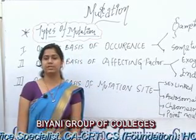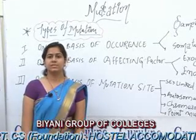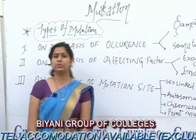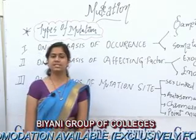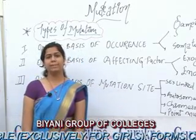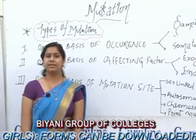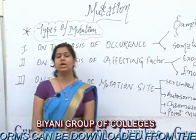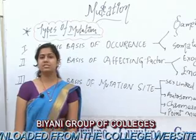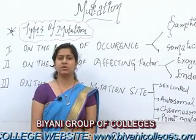Second is base pair substitution, which has different types. First is base pair substitution itself. Second is base analog. Third is ionization. Base pair substitution is further divided into two categories: transition and transversion. In transition mutation, purine is replaced by purine and pyrimidine is replaced by pyrimidine — for example, adenine replaced by guanine, or cytosine replaced by another pyrimidine. In transversion, purine is replaced by pyrimidine and pyrimidine is replaced by purine, also known as vice versa.